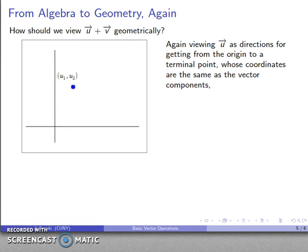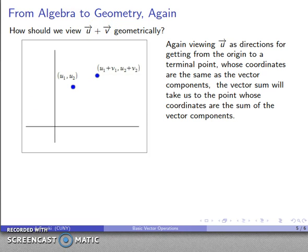So this expression here is both the vector, and it also tells us the terminal point, the point that we end up at. Now, when I add this vector v, I am going to end up at a different point: u1 plus v1, u2 plus v2.